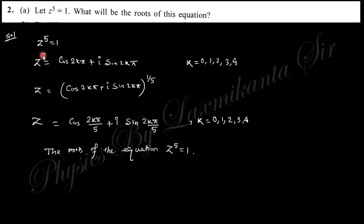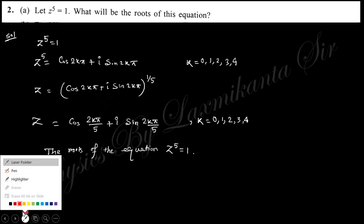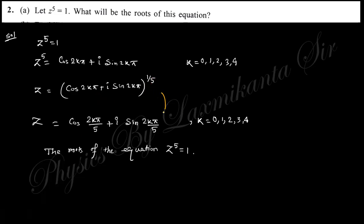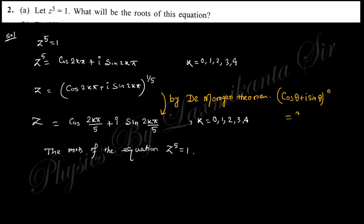Now z equals to this, which can be written as 1 to the power 1/5. By De Moivre's theorem, that is (cos θ + i·sin θ)^n = cos(nθ) + i·sin(nθ), and so this 1/5 power is written here.